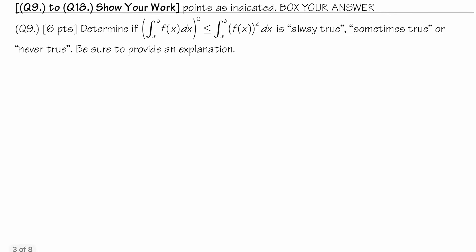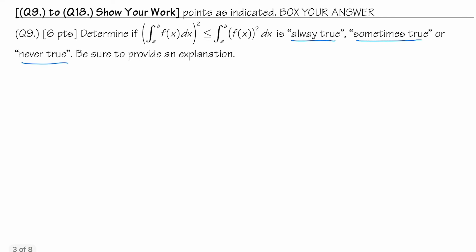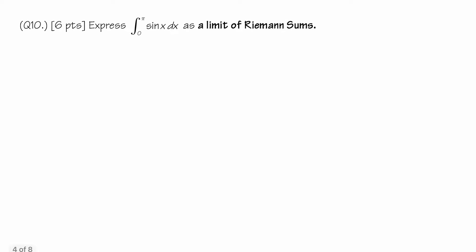Number 9: determine if the inequality — (∫ₐᵇ f)² ≤ ∫ₐᵇ f² — is always true, sometimes true, or never true. This is a question the instructor gives students in advance so they can find a counterexample or proof. The answer won't be given here so students watching don't just copy it. Moving on to number 10.